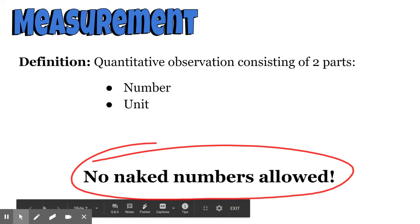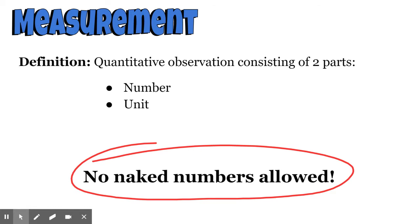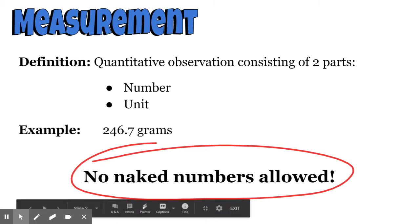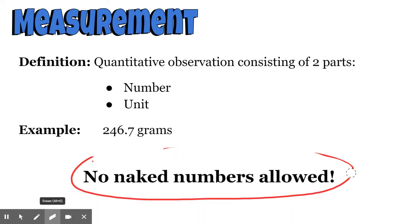A bare number doesn't tell us enough. We need that second part of the observation, and that is the unit. 6 apples, 5 dogs, 100 pounds. Those are all examples of numbers and units. An example: 246.7 grams. There's a number, a quantitative observation. We know how much with a label that tells us what we're actually measuring.